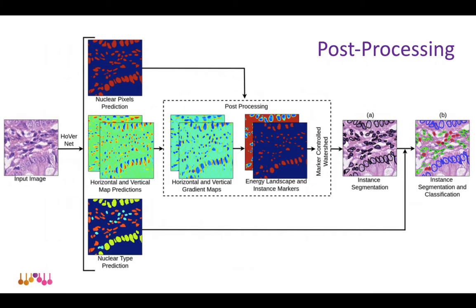Once we have the three branch predictions — the NP branch output, the hover branch output, and the nuclear type branch output — we apply a series of post-processing steps. We calculate horizontal and vertical gradient maps using the Sobel operator, then after further post-processing obtain an energy landscape and instance markers. We then apply marker-controlled watershed to get the instance segmentation mask, and using the nuclear type prediction mask we obtain the final instance segmentation and classification output.